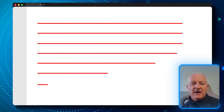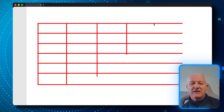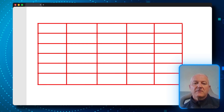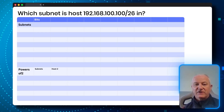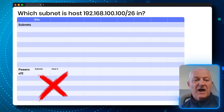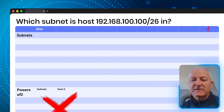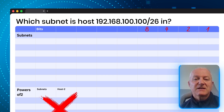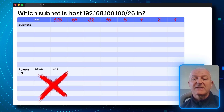You draw a square with horizontal and vertical lines — here's a neater version on the slide. In the top row you write your binary math. Start with the number 1 and double it: 1, 2, 4, 8, 16, 32, 64, 128. You only have to do this once for your entire exam. You don't need to do binary with my method — you just need to write these numbers down.